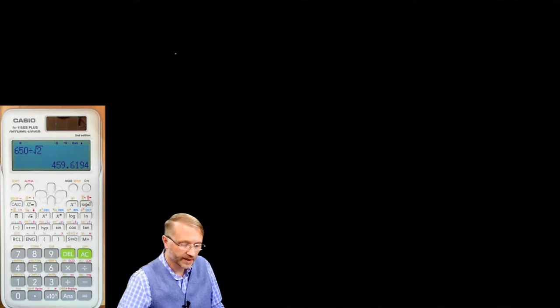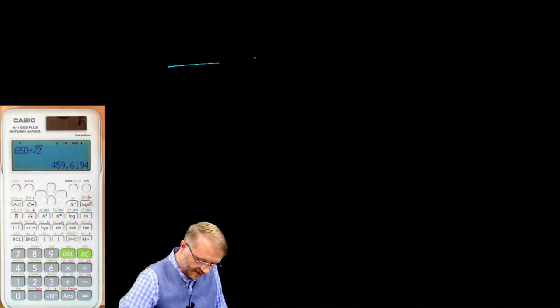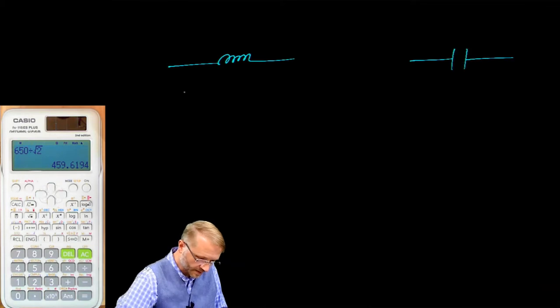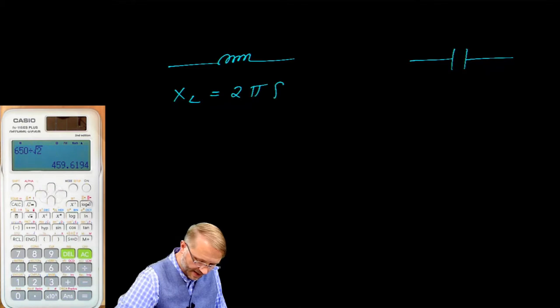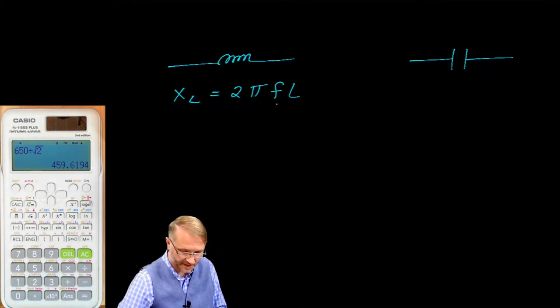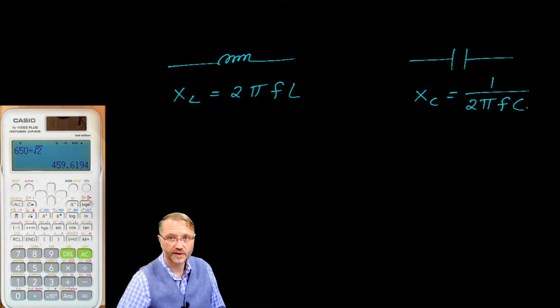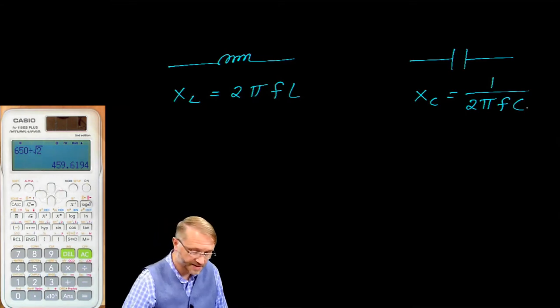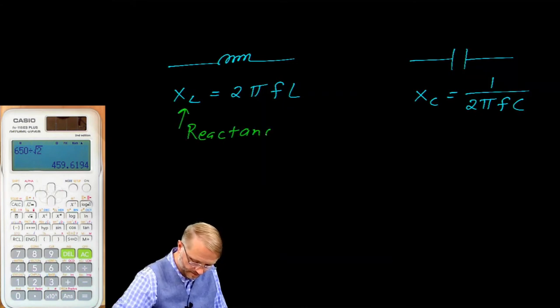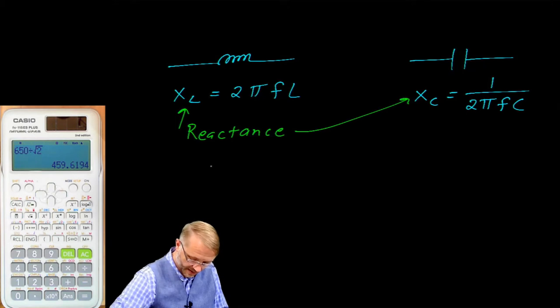Moving on is the closely related topic of inductive and capacitive reactance. We can say the inductive reactance is equal to 2 pi f L where F is the frequency of the circuit and L is the inductance of the physical device. For the capacitor, the capacitive reactance is equal to 1 over 2 pi F C, where F is the frequency that the circuit is operating at, and C is the capacitance. Again, this is reactance. Not to be confused with impedance.